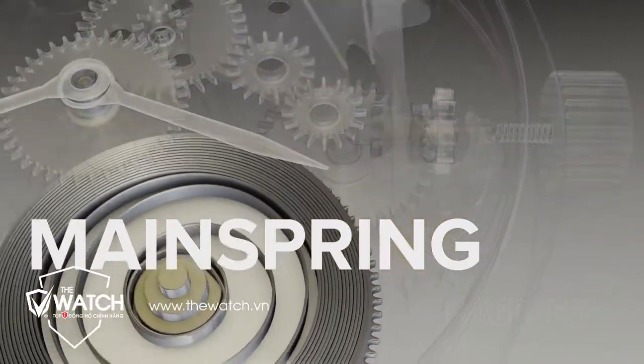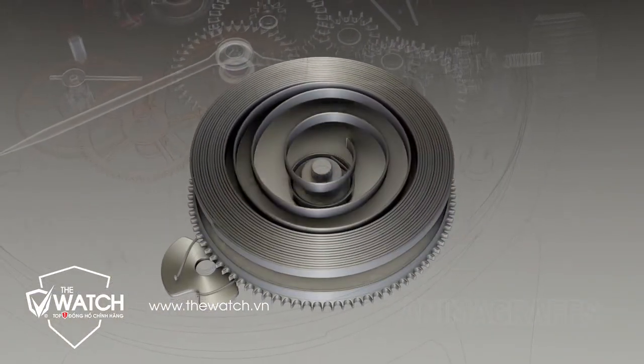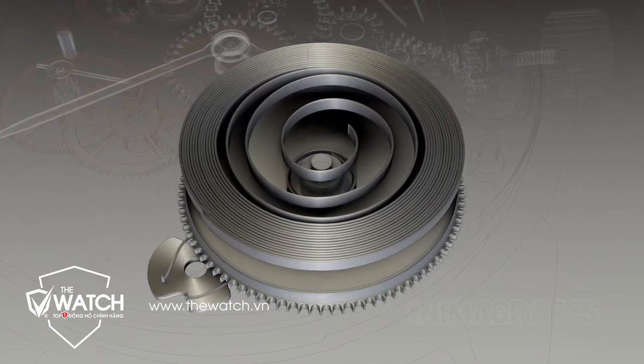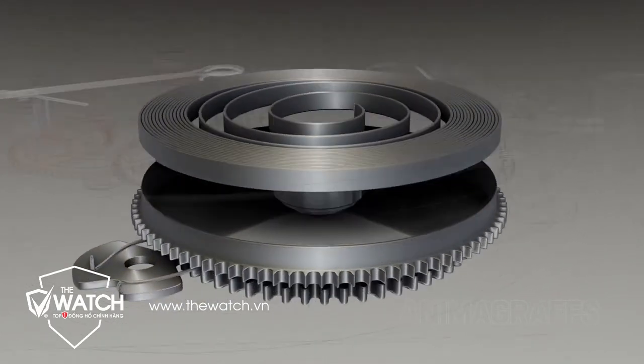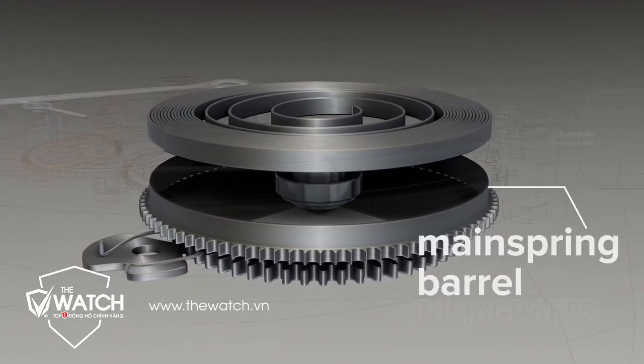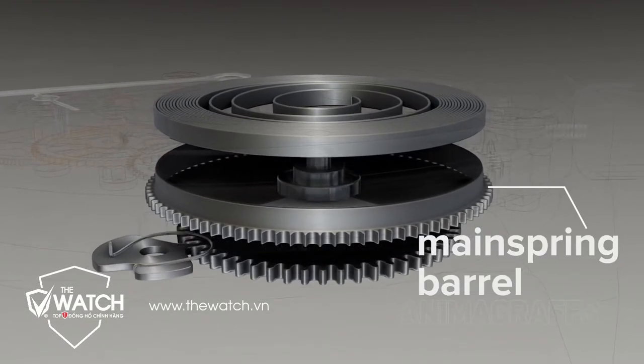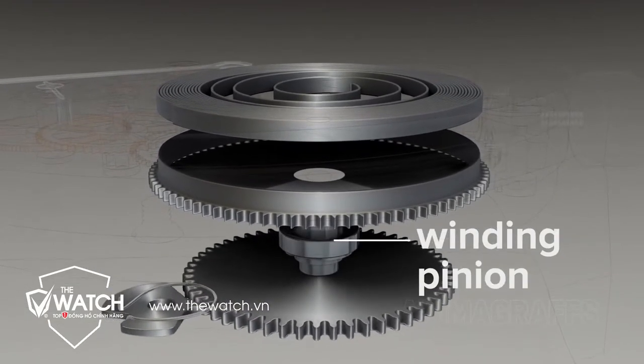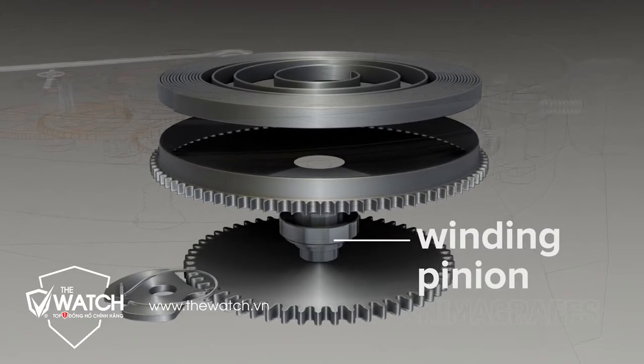The mainspring. The mainspring is a thin, nearly foot-long strip of hardened metal coiled into a spring and contained by the mainspring barrel. It's connected to the winding pinion at one end and the mainspring barrel at the other.